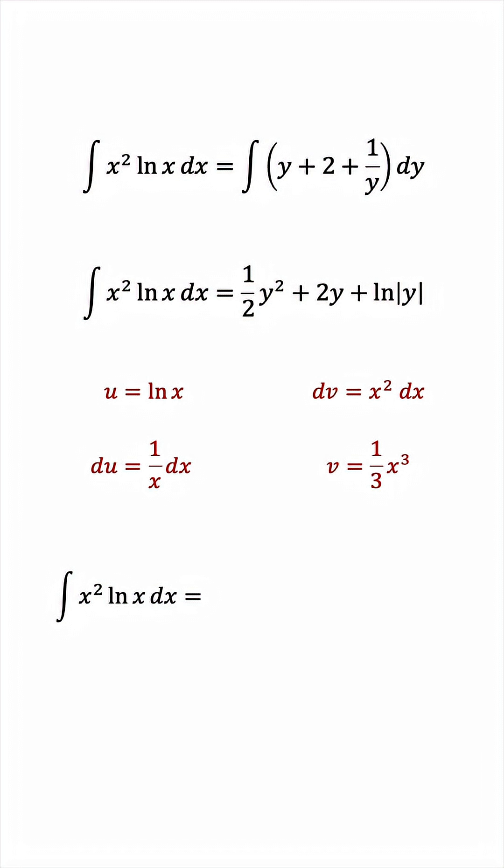Now, we'll use the integration by parts formula. u times v, minus the integral of v times du. This becomes x squared inside the integral. We can take 1 third outside, and integrate x squared. This becomes 1 over 9 x cubed.